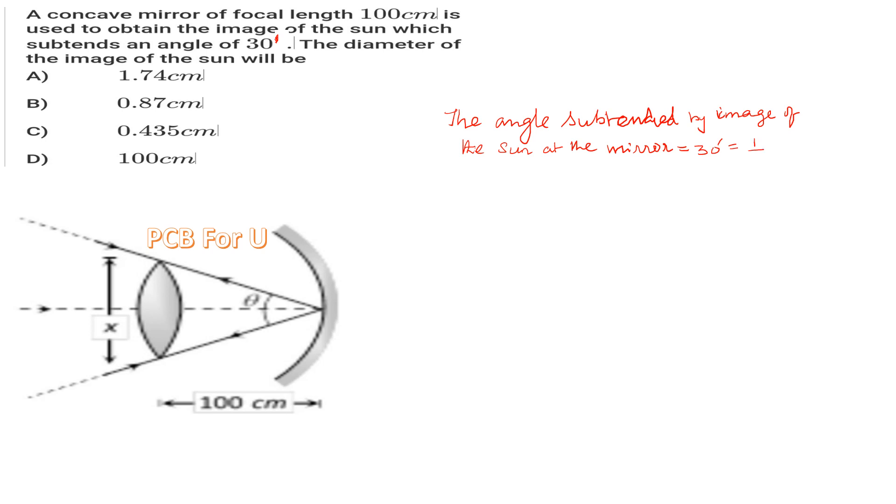At the mirror it's 30 minutes, so we have to convert it into radians. 30 minutes equals half degree, that is 1/2 degree. This is also equal to π/360 radians, because 1 degree equals π/180, and half degree equals π/360.